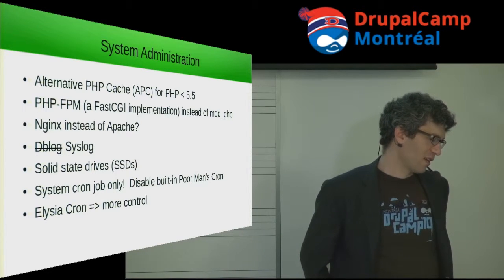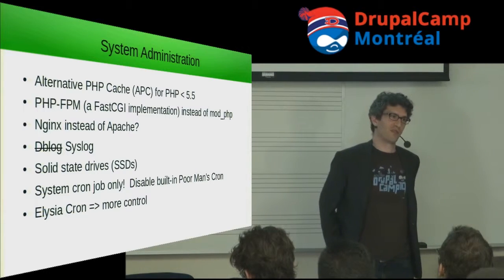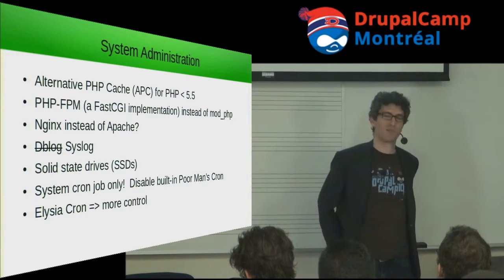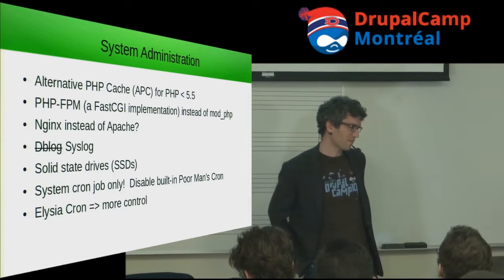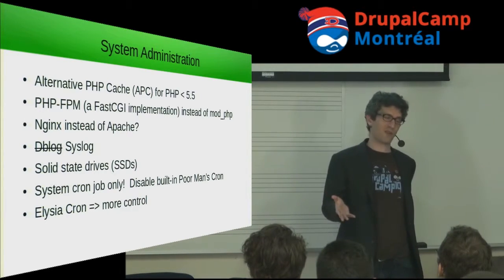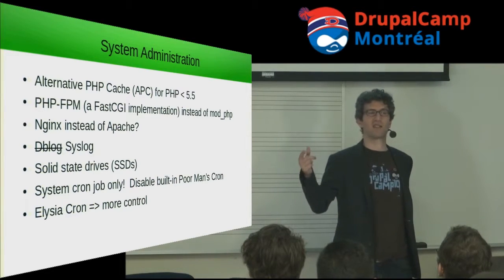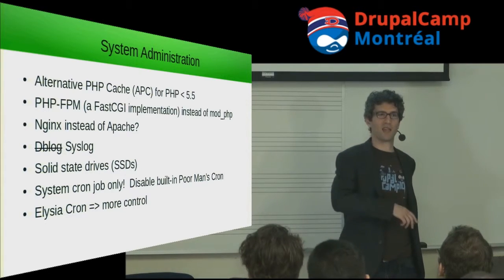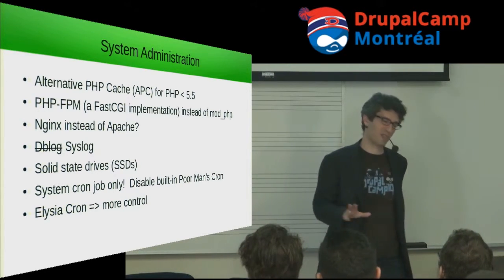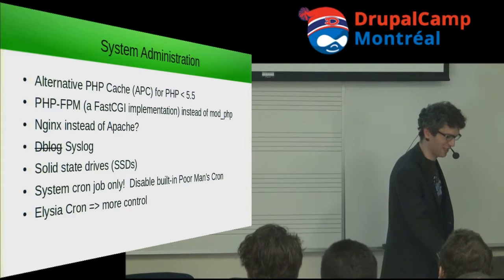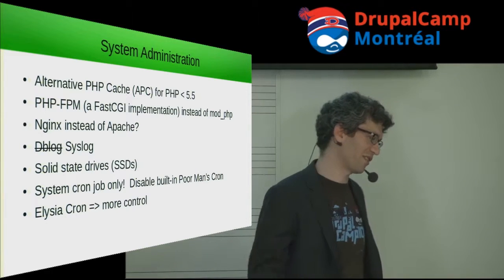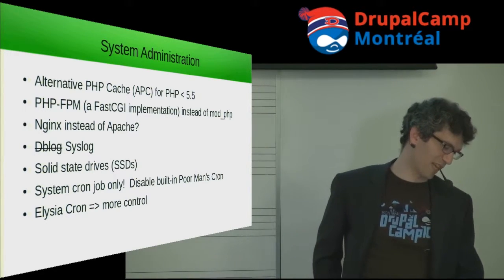Drupal core ships with database logging — your view recent log entries and similar features. That's not great for performance because there's a database hit every time you record a log entry, and you're also filling up your database. The syslog module, which is in core, is a better way to do it. It sends log entries to your operating system's normal logging process — you can put all your logs in, say, /var/log/drupal.log. Then you can blow away your database table that has all the old log entries. Solid state drives are another good thing if your hosting uses them.